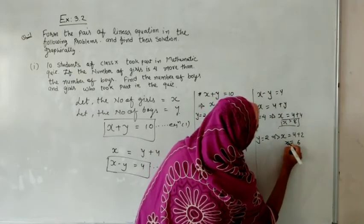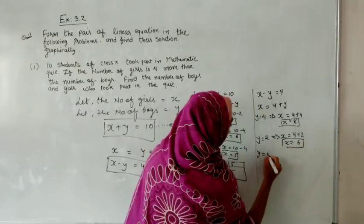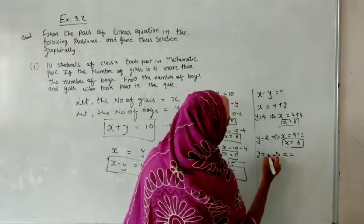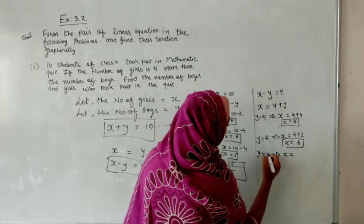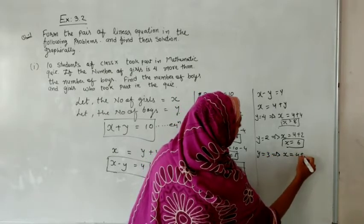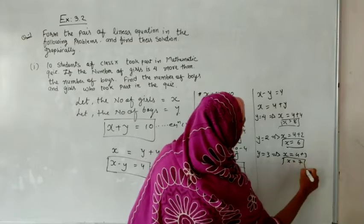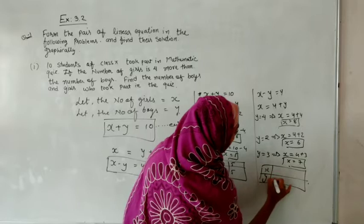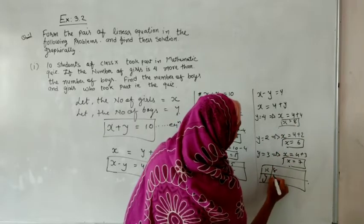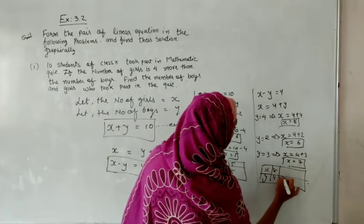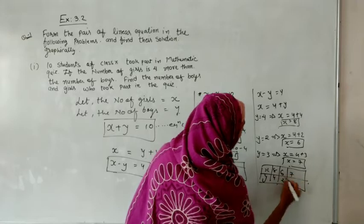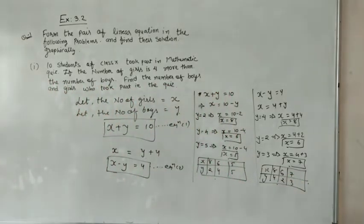So x equals 6 when y equals 2. If I take a different value, let me take y equals 3. Then x equals 4 plus 3, so x will become 7. The table of values for equation 2: x = 8, y = 4; x = 6, y = 2; x = 7, y = 3. Now we have to plot these on the graph.